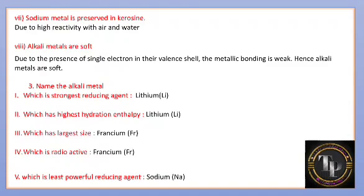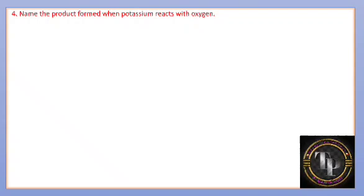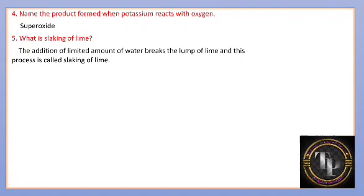Name the product formed when potassium reacts with oxygen. Superoxide is formed — KO2, potassium superoxide. What is slaking of lime? The addition of a limited amount of water breaks the lumps of lime, and this process is called slaking of lime.